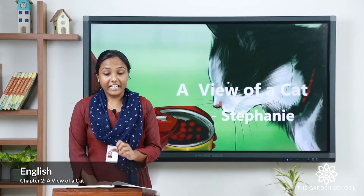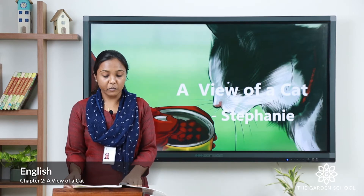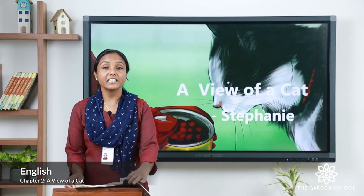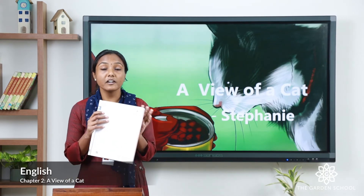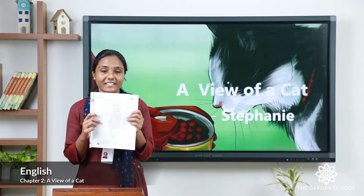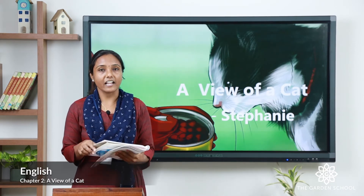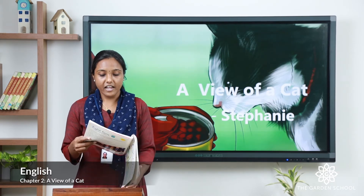Can you see the poem? In page number 31 it's in the shape of a cat. It's nice, right? So let us read and understand.